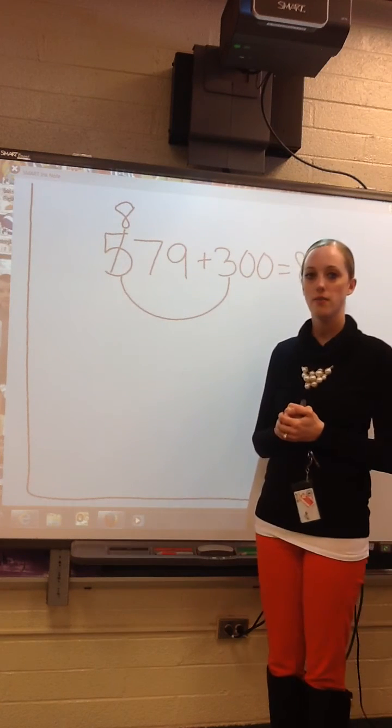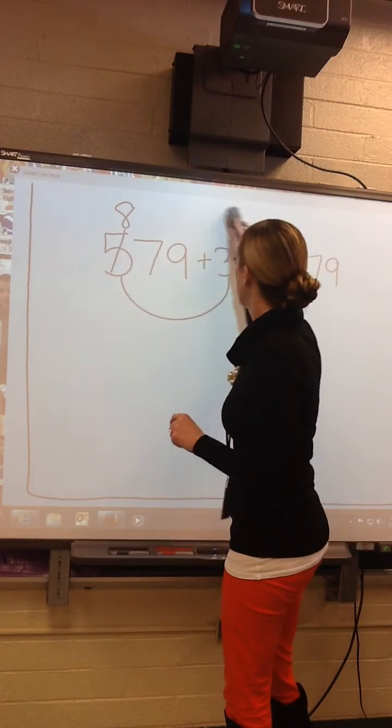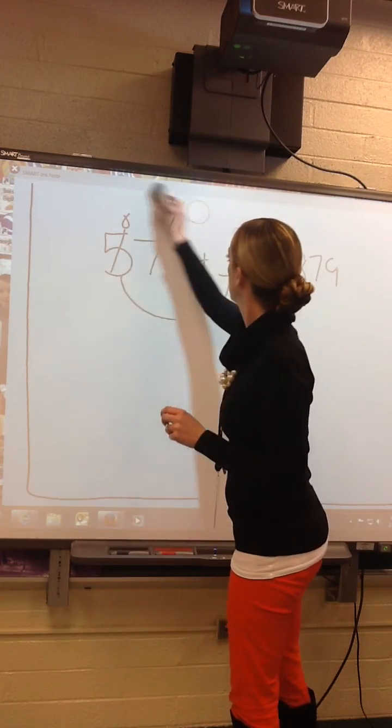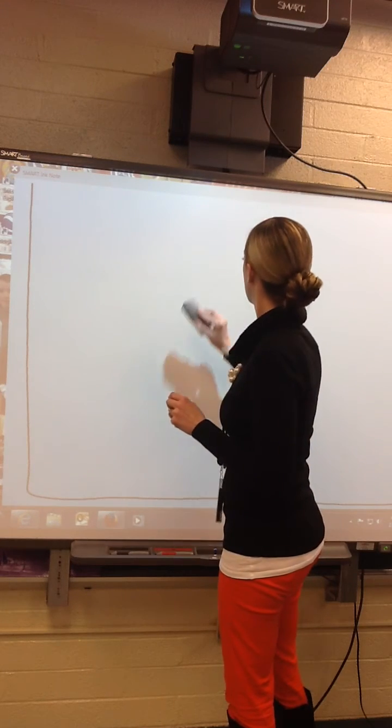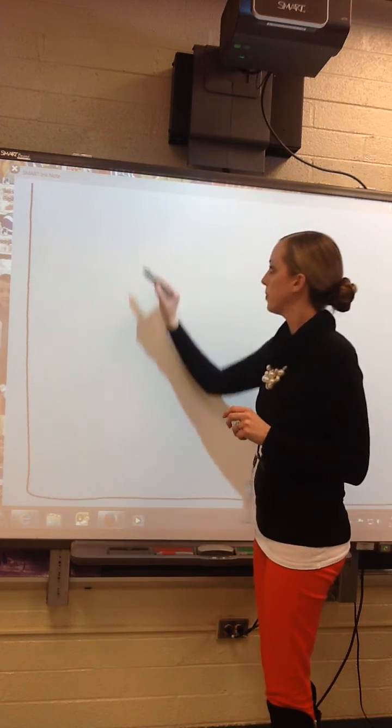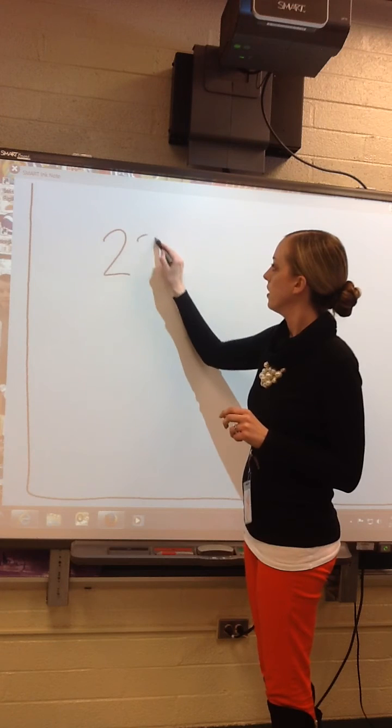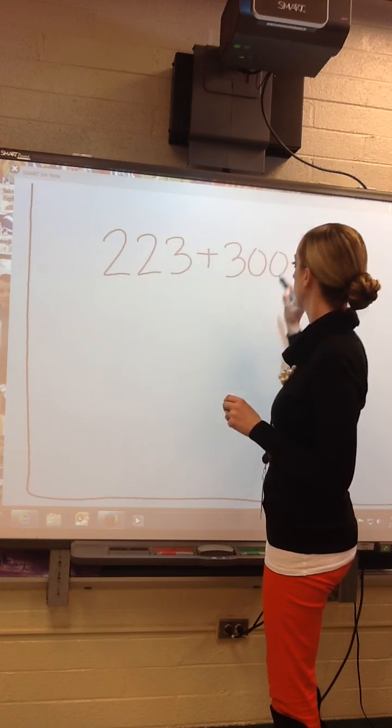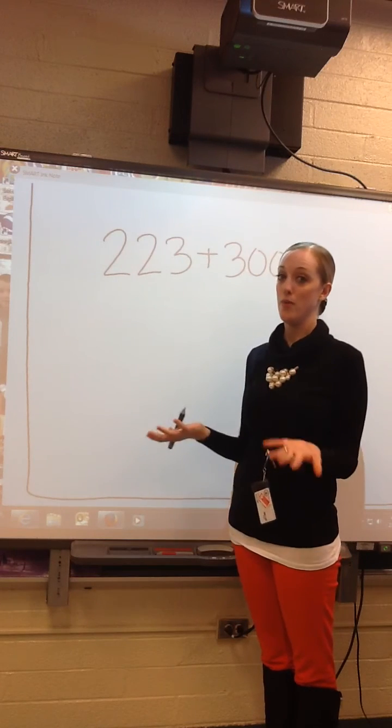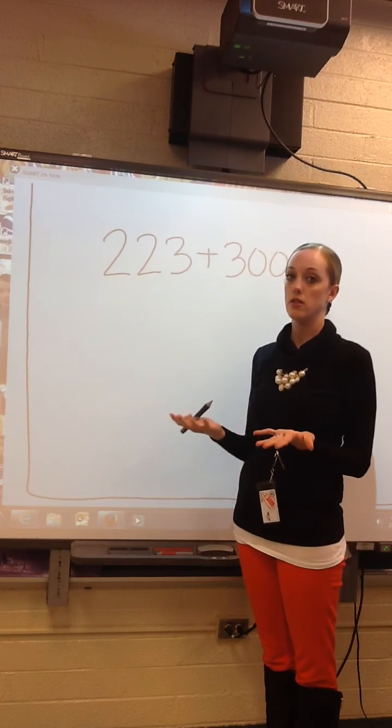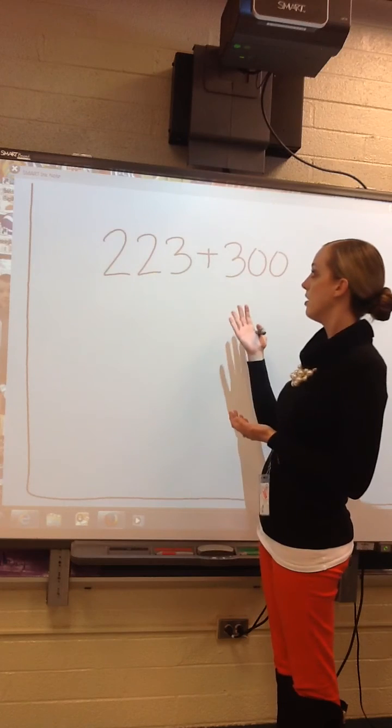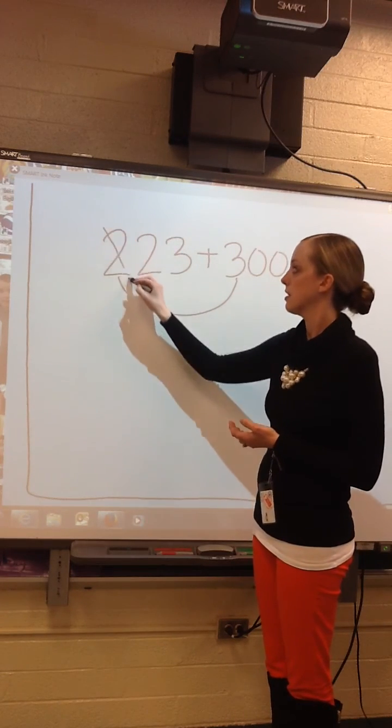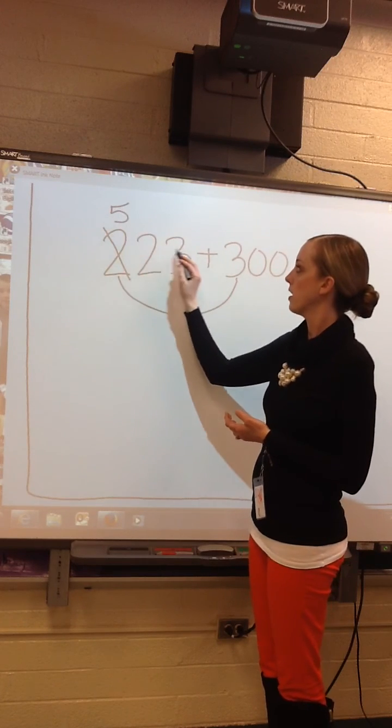Okay, I'm going to do one more. Yikes. 223 plus 300. Again, what am I adding? Hundreds, tens, or ones? I'm adding hundreds. 300 plus 200 is 500. My sum is 523.